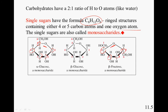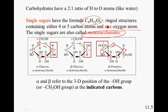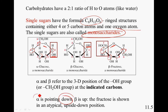The single sugars are called monosaccharides. Alpha and beta refer to the 3D position of the OH group of the indicated carbons — whether it's pointing down or whether it's pointing up. These arrangements dictate how they will link up in chains and how they will react in our bodies. Alpha is pointing down while beta is up. So for instance, if OH is down, it's alpha; if OH is up, it's beta.